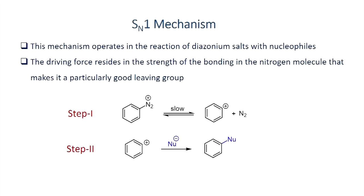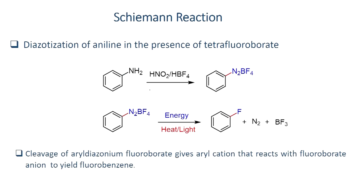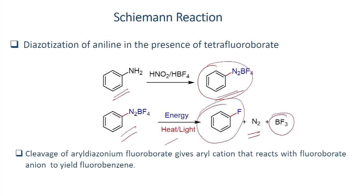In the Balz-Schiemann reaction, the diazonium salt loses a nitrogen molecule when energy is applied, generating a carbocation. The driving force resides in the strength of the N≡N bond. For example, aniline is converted into a diazonium tetrafluoroborate salt when reacted with HNO2 and tetrafluoroborate. When the salt is heated, it loses nitrogen molecule and BF3 to form fluorobenzene as the product.